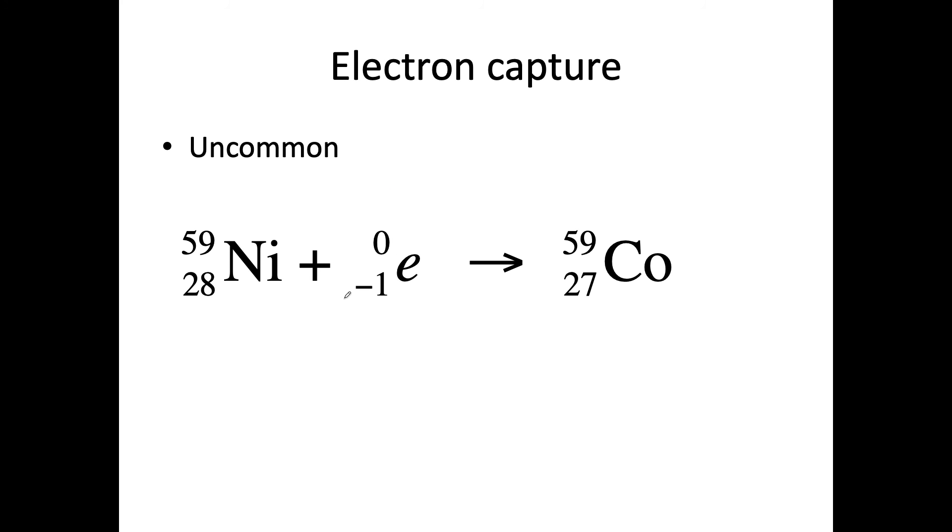And let's talk about electron capture. This is a little bit uncommon. It's where we see the electron on the left as part of our reagents. So mass is 59 plus 0. That gives me 59. And for the protons, I have 28 in nickel. I'm also losing one because of the electron being captured. So that's going to give me 27.